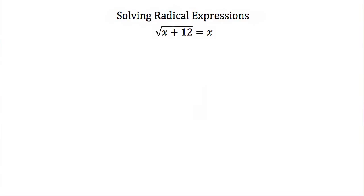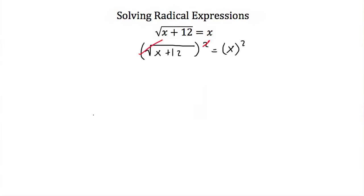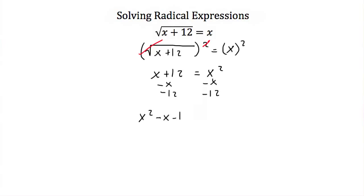Now let's look at this last example, where we have a variable on both sides: the square root of x plus 12 is equal to x. The square root term is alone on one side, so we square both sides. Squaring the left cancels the square root, leaving x plus 12. On the right, we get x squared. So we have x plus 12 equals x squared. This is a quadratic — moving all terms to one side by subtracting x and 12 from both sides gives x squared minus x minus 12 equals 0.